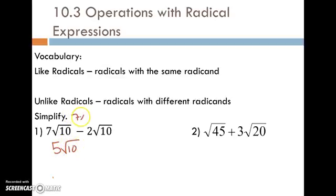This is how I want you to think of this. Think of this as 7x - 2x. That would equal 5x altogether. So 5√10.